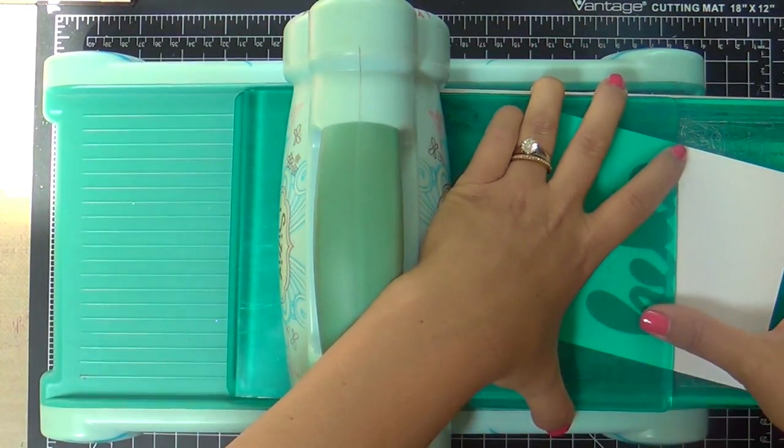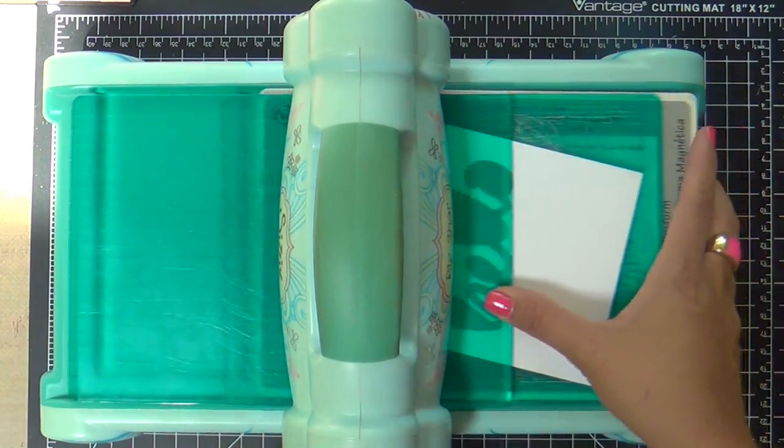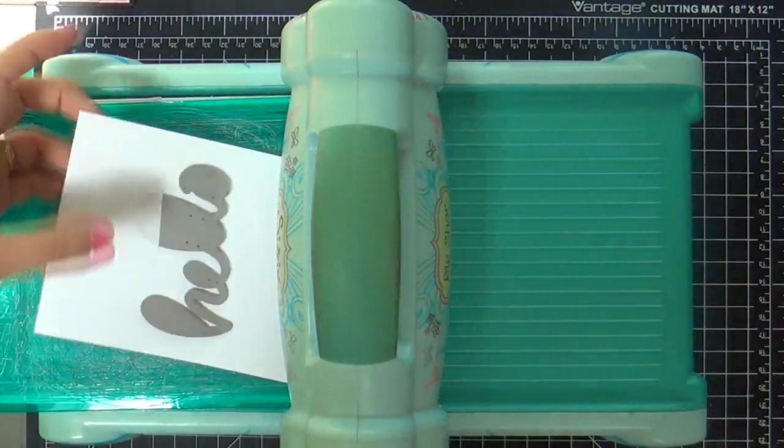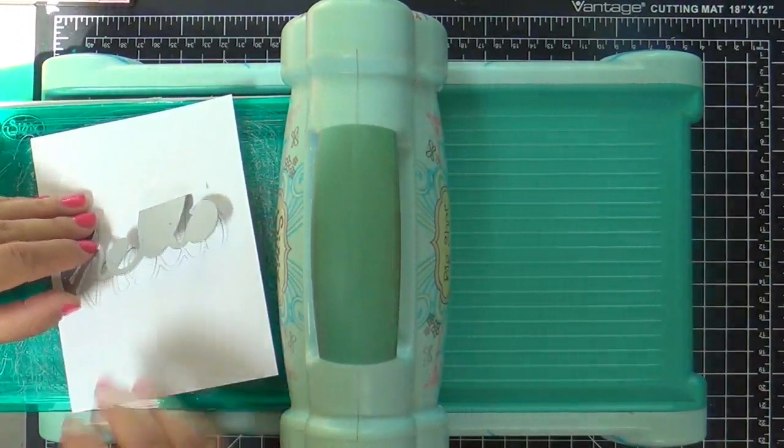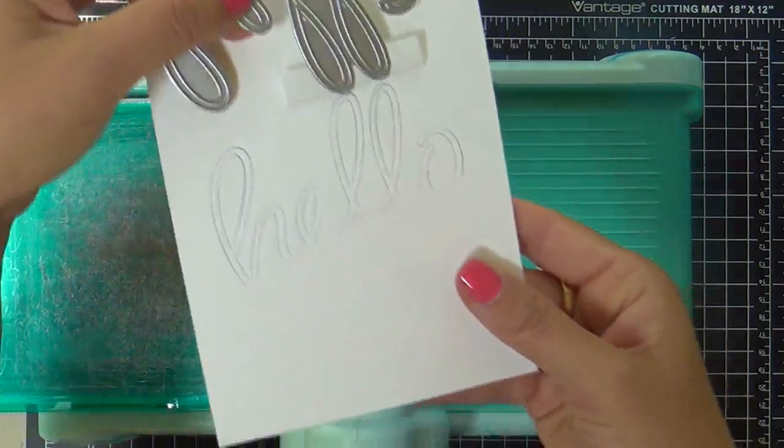So you can see how I put that in, but I leave my top cutting plate halfway. A little sliver of that Hello word die cut is still peeking out the bottom. Hard to see that, but that's how you partial die cut. You don't insert your die 100%. You leave a little smidge of it hanging out the bottom.